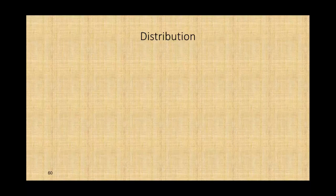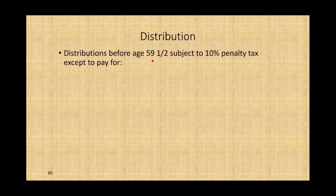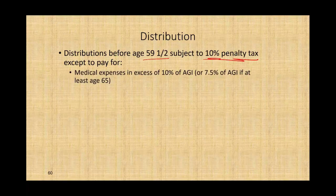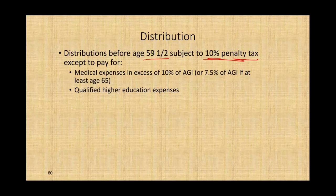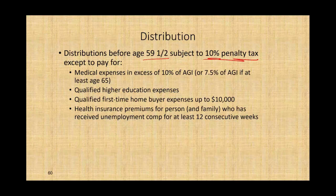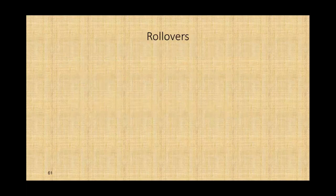Any distribution made before age 59 and a half is subject to a 10% penalty, except for medical expenses in excess of 10% of AGI, qualified higher education expenses, qualified first-time homebuyer expenses up to $10,000, and health insurance premiums for a person who has received unemployment compensation for at least 12 consecutive weeks. When we talk about the IRA, you'll also hear the word rollover — you need to understand what a rollover is.